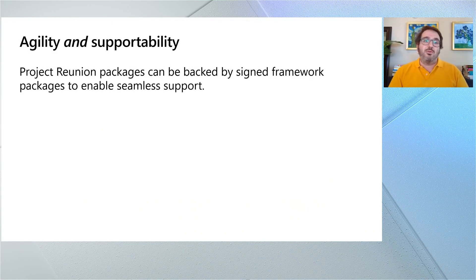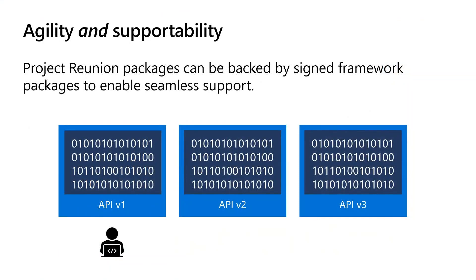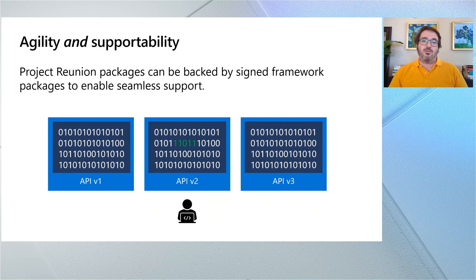Something people have liked about Windows APIs shipped in the past is their serviceability and supportability. Project Reunion packages can be backed by signed framework packages to enable seamless support — a technology we already use for things like the C++ runtime. So if you're a developer writing against version one of an API and decide to move to version two, you're in control of that because they're shipped out of band as packages with side-by-side versioning. But if a critical security bug is found, we can update the package under the covers for you without requiring you to recompile and redeploy. This strikes a great balance: you control API version upgrades, while we handle critical fixes.